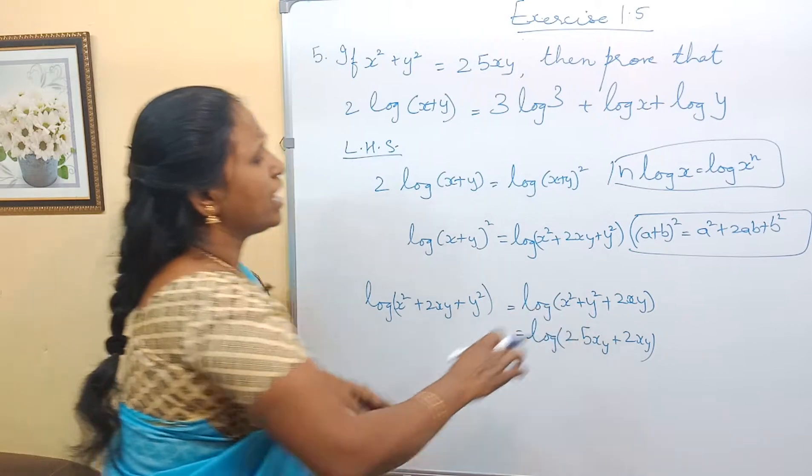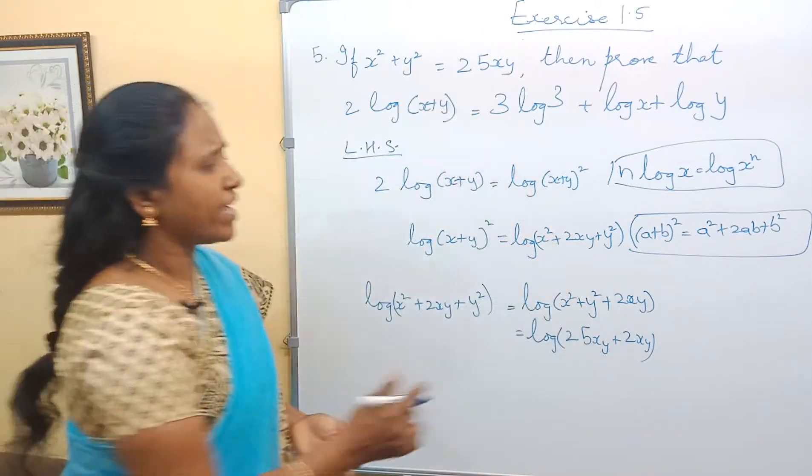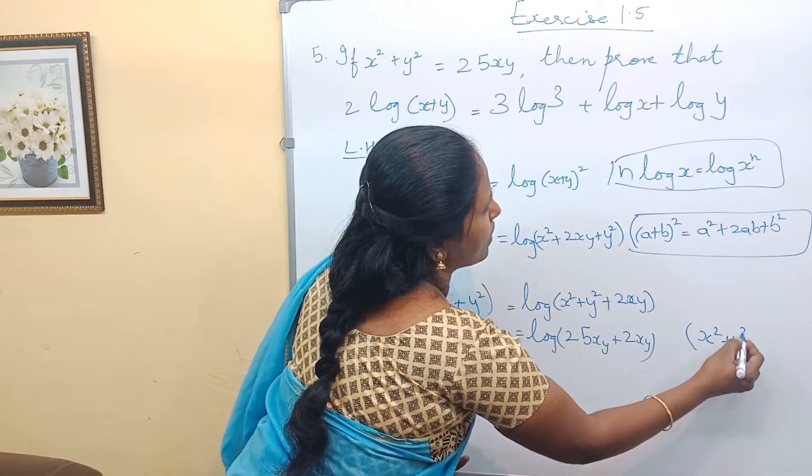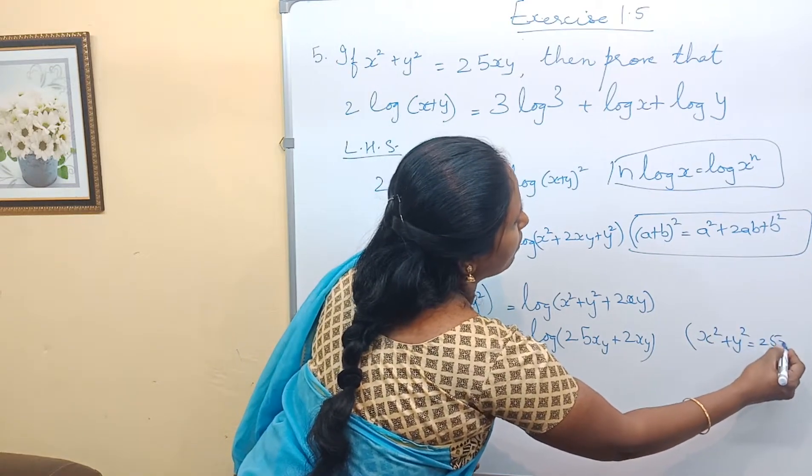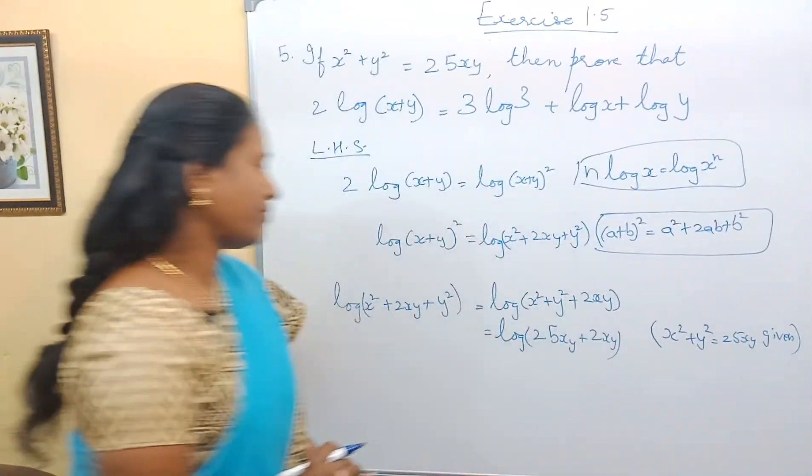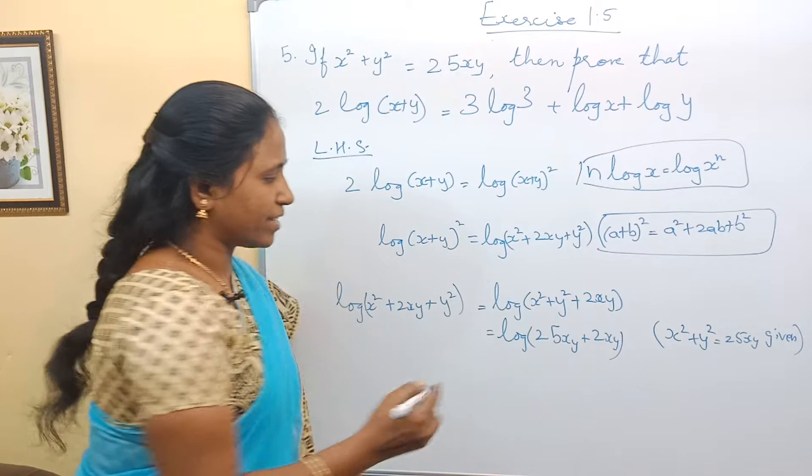That is, I am just substituting x² + y² with 25xy. So we should write the reason here: x² + y² = 25xy, which is the given data. Okay? So now these two are like terms.